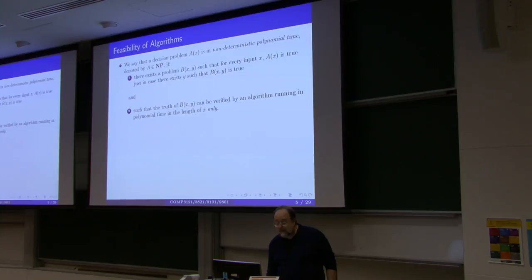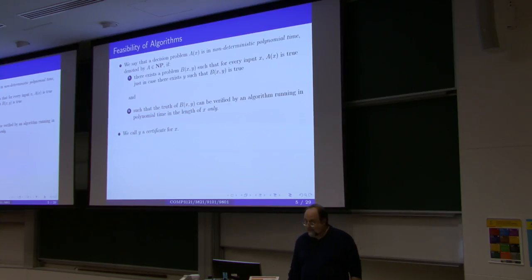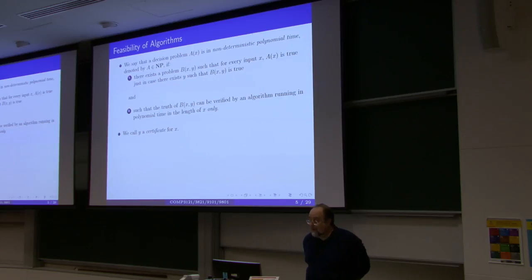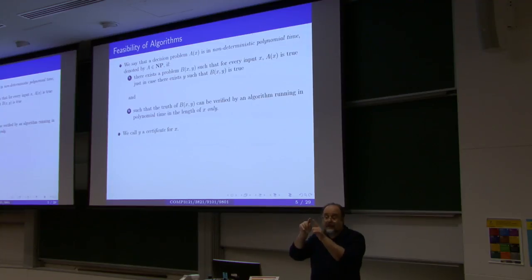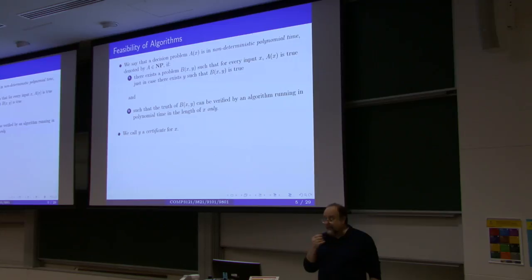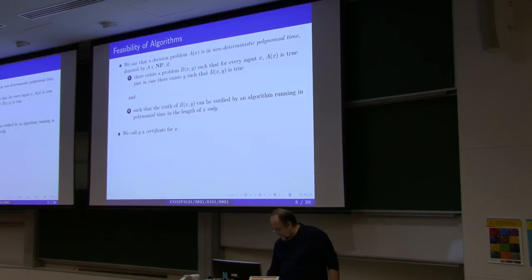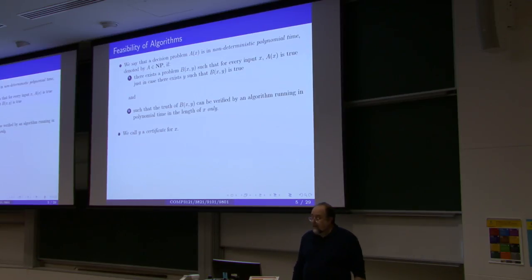This element y is called a certificate for x. In the case of the graph problem, B(x, y) is computable in polynomial time in x, because if I give you the graph and a permutation of its vertices as y, you can check whether x1-x2 is an edge, x2-x3 is an edge, and xn-x1 is an edge — obviously in polynomial time, in time linear in the number of vertices and edges.